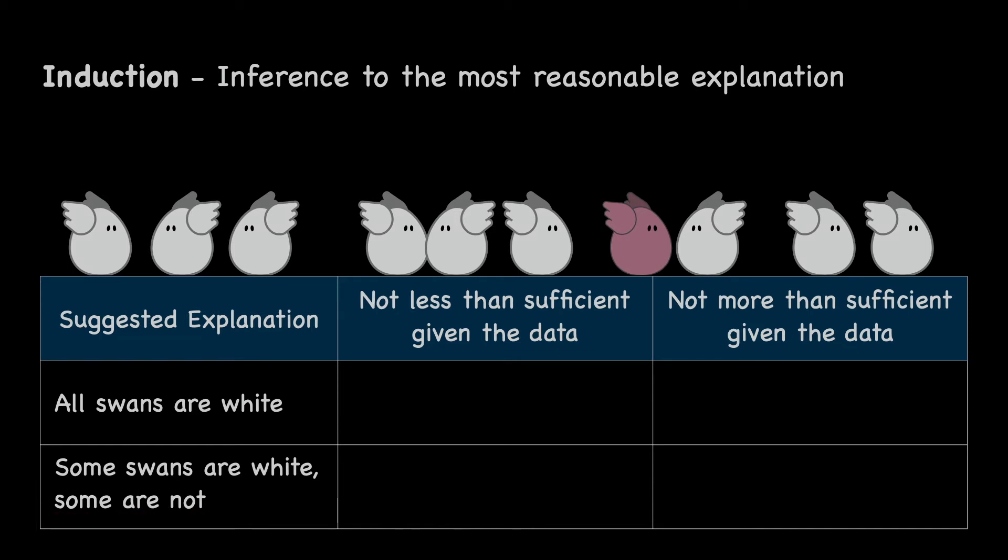But now, if the next swan we observe turns out not to be white, this time another explanation is more than sufficient, but the first explanation no longer sufficiently accounts for all the data. And so, the second explanation becomes the most reasonable one.